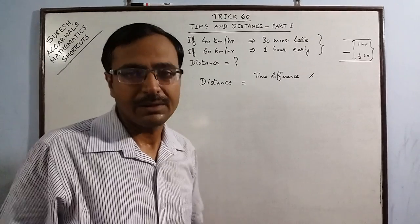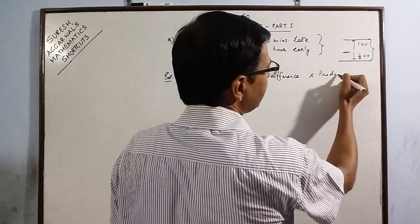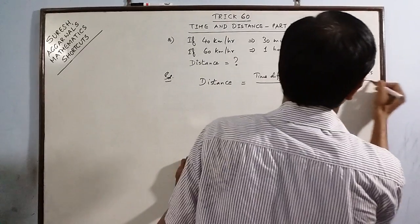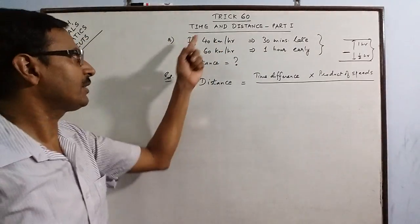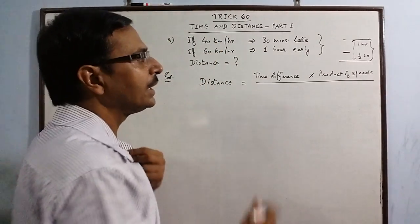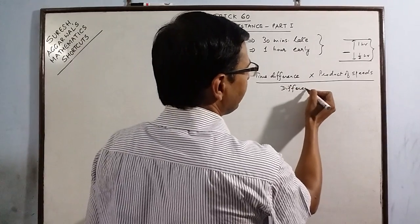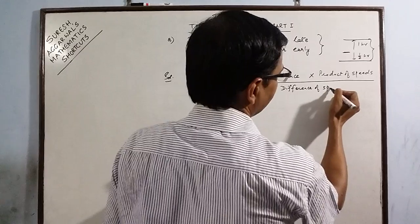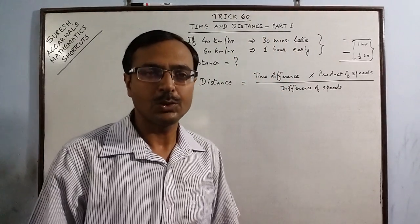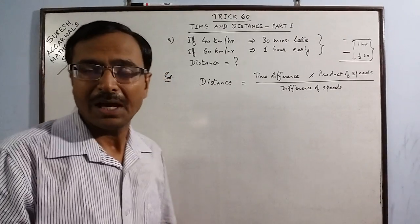Then you have to multiply this time difference by the product of the two speeds given, product of speeds. The two speeds given here are 40 and 60. Obviously, the product is 40 into 60. Then in the denominator, you have the difference of speeds. This is a very simple concept which can be used in competitive exams for finding the distance.